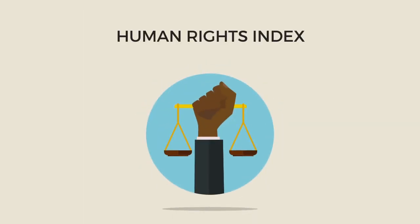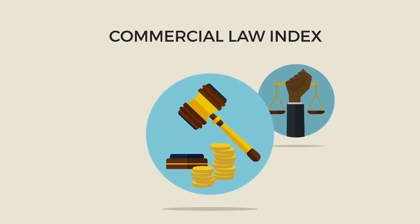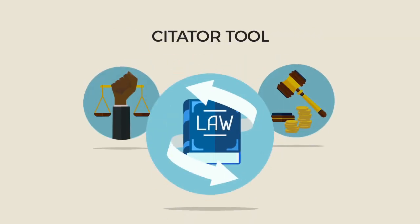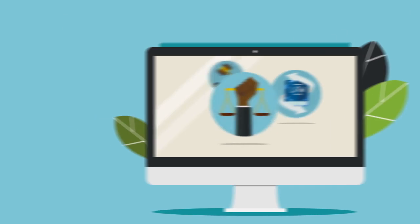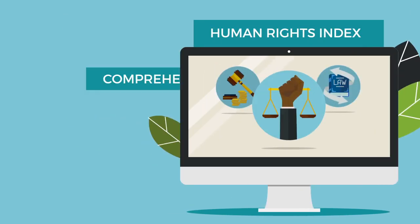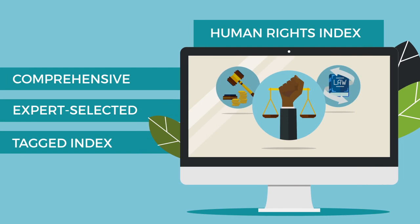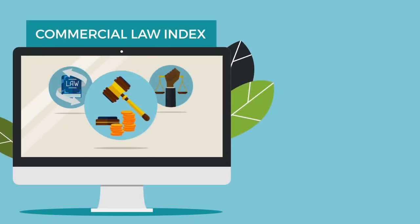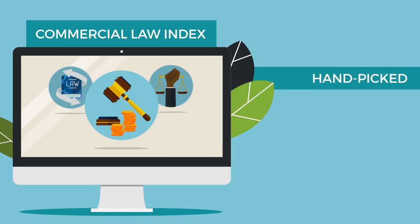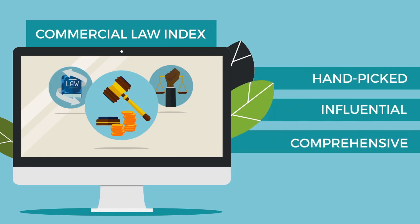Among the tools available are the Human Rights Index, the Commercial Law Index and the Cytator Tool. Firstly, the Human Rights Index is a comprehensive, expert-selected and tagged index that allows you to understand the African human rights landscape on a multitude of topics. Next, the Commercial Law Index makes available a hand-picked selection of the most influential and comprehensive sources of commercial laws of African countries.